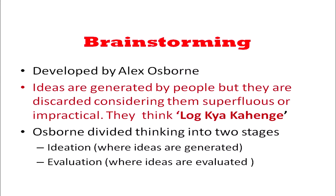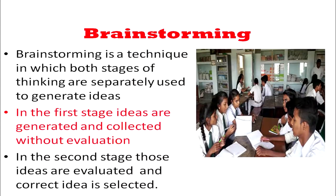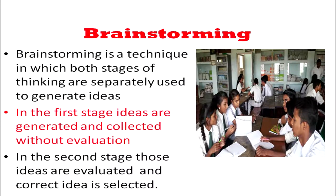If we separate both stages, and in the first stage when ideas are generated, evaluation is postponed — not done — then you have a large number of ideas. After you have collected the ideas, then you are free to go to the second stage and evaluate the ideas and select the correct one. How will we introduce brainstorming in our classroom? Make a group of six to eight learners and they should sit in a circle. Then find out a problem of interest.